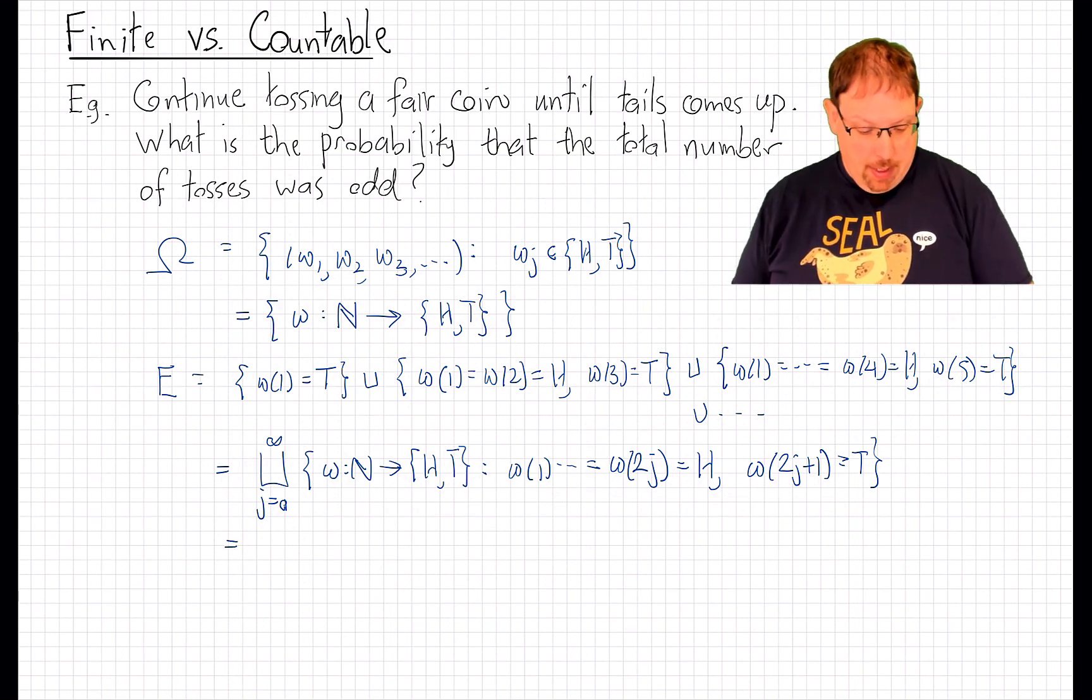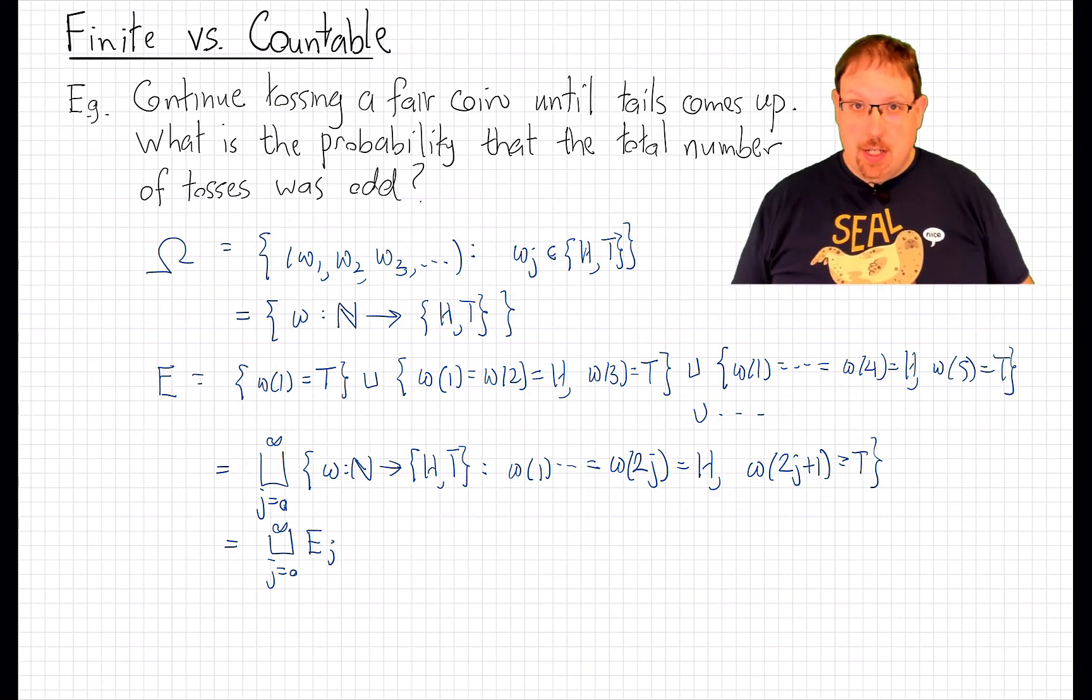All of these events have no outcomes in common with each other, so they are disjoint. Let's call them E_j. The event we're interested in,